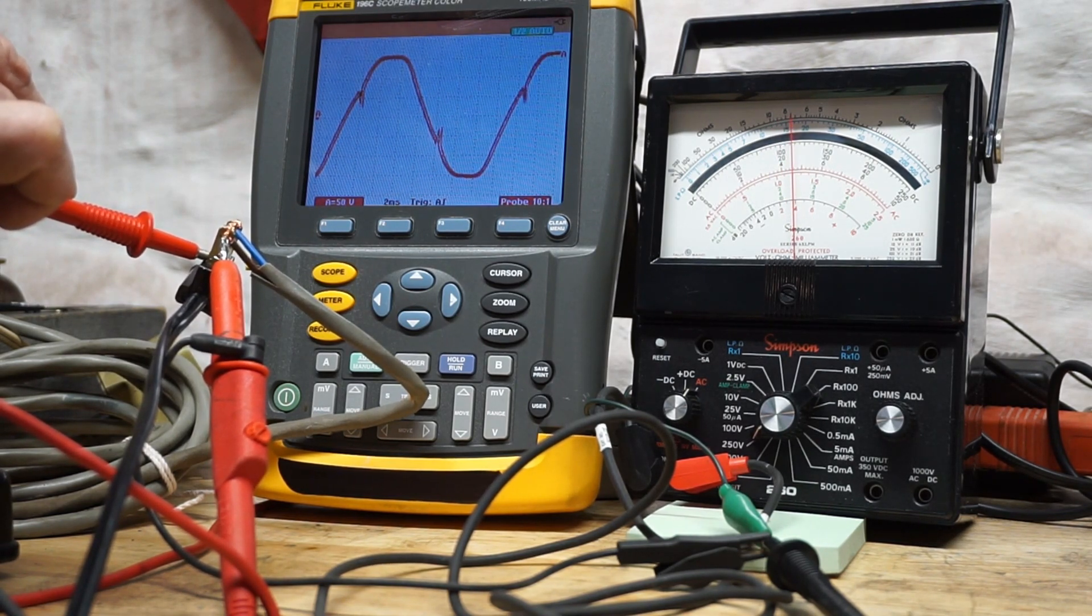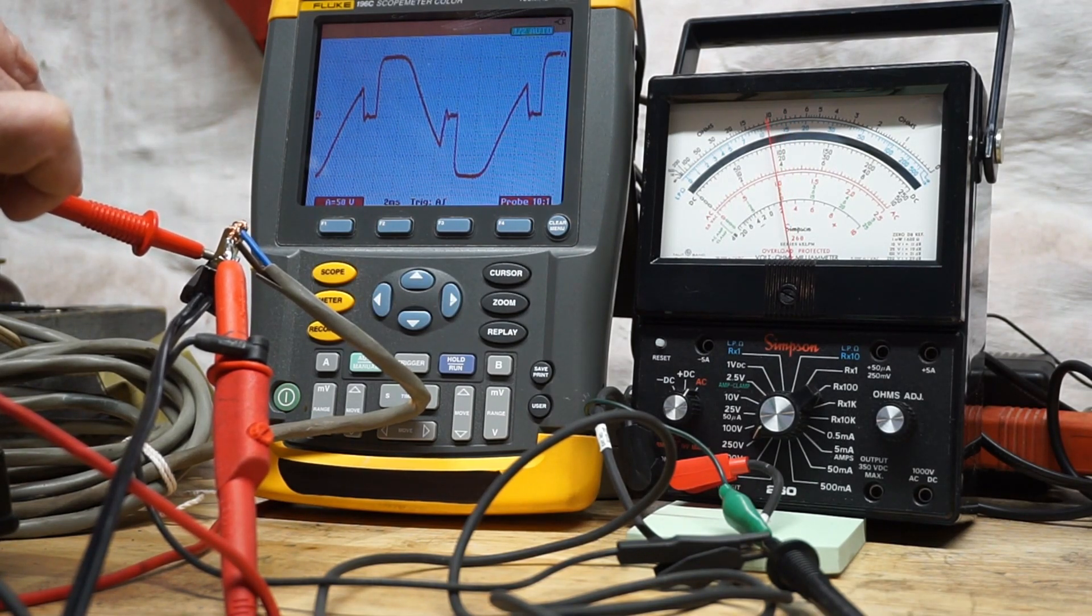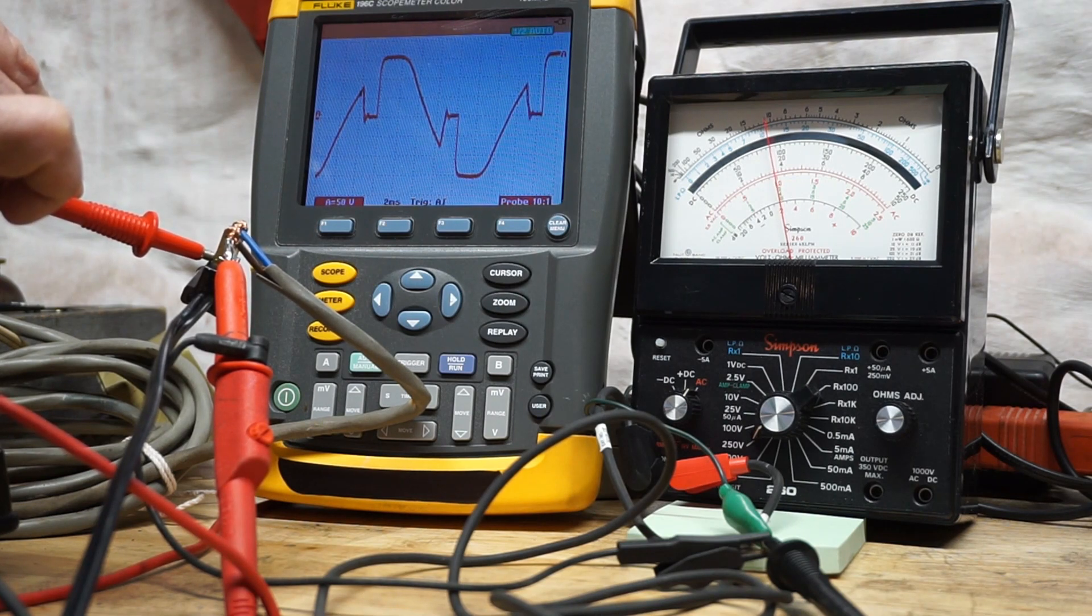You see the voltage is up, and now the voltage reduces because the VOM is looking at the root mean square, the average voltage.